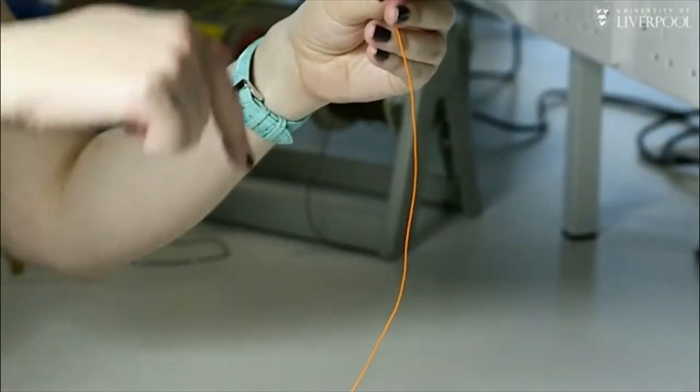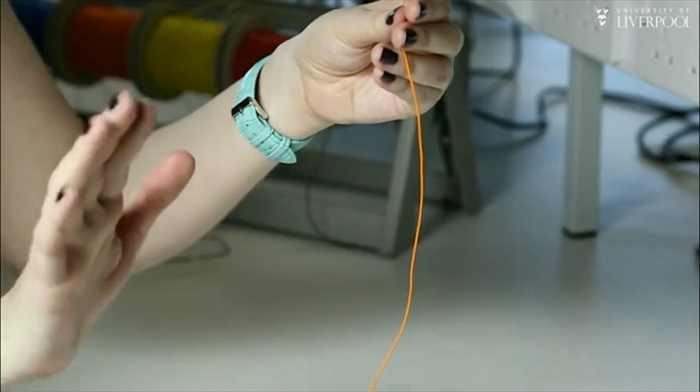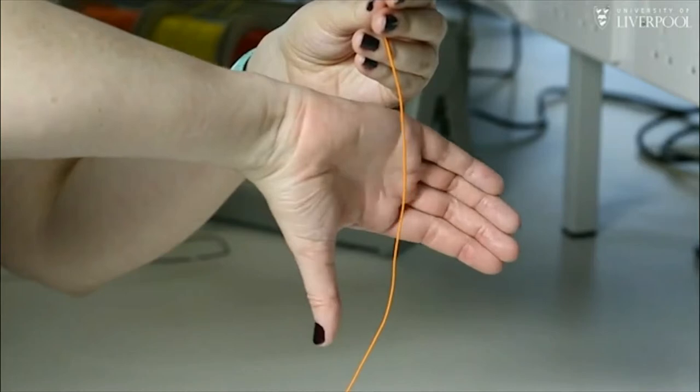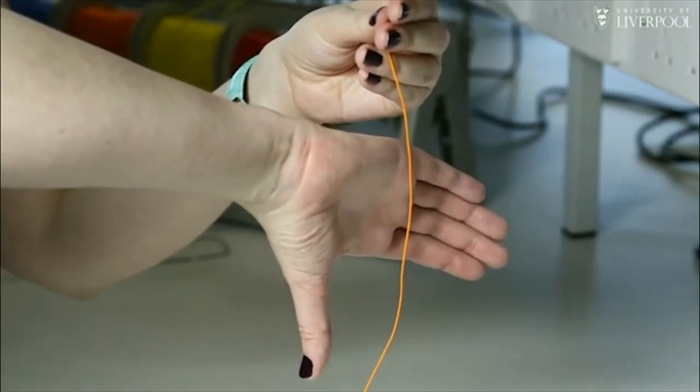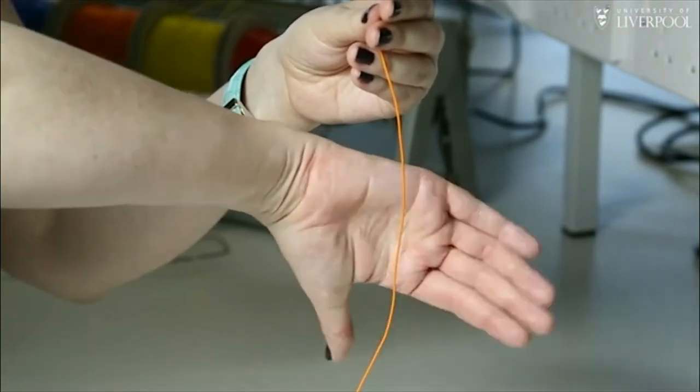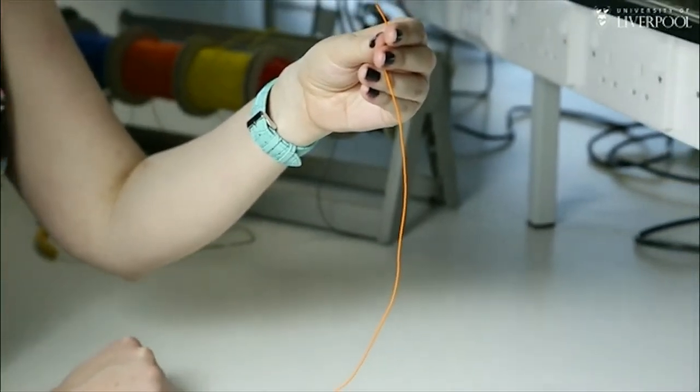So this time the current is going to go in the opposite direction so it's going to go downwards. Again using my right hand I'm going to put my thumb in the direction of the current field and you can see that my fingers are going to curl in the direction of the magnetic field lines and we can see that this is now in the opposite direction than it was when the current was going upwards and that is how you find the magnetic field around a current carrying wire.